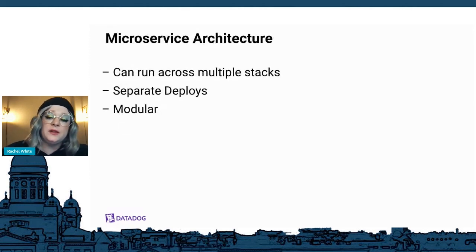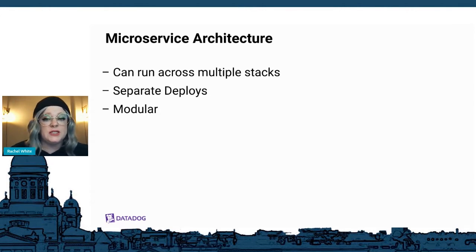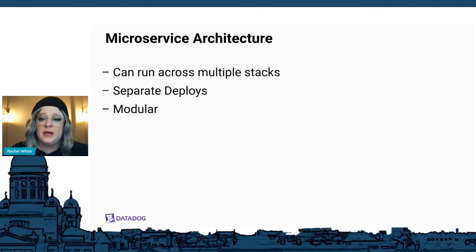An improvement on the traditional architecture is microservices. In a microservices environment, everything is separate and relates to a specific feature. You can mix technologies by choosing suitable programming languages and frameworks for each service. This allows for better scalability, and each service can be scaled independently according to its traffic, and each feature is deployed separately.